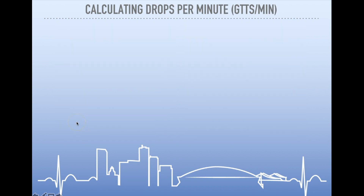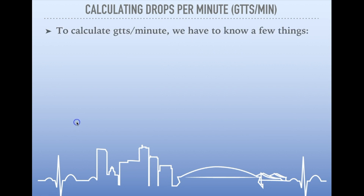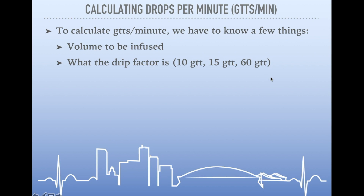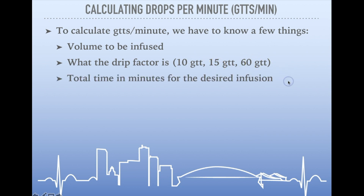So really what the question becomes is: how do we calculate drops per minute? To calculate drops per minute, we have to know a couple of things. We have to know the volume to be infused, the drip factor — that's just the drop set we'll be using, whether it's a 10 drop set, a 15 drop set, or a 60 drop set — and then finally, we need to know our total time in minutes for our desired infusion.